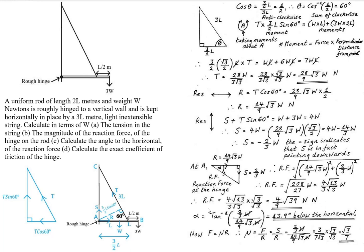Since force is a vector quantity, as well as the magnitude we need to find the direction. Let alpha be the angle that the reaction force makes with the horizontal. Alpha equals the inverse tan of the opposite over the adjacent, which is (2/3 W) divided by R = (14/9√3 W). The W's cancel, and evaluating gives an angle of 13.9 degrees below the horizontal.